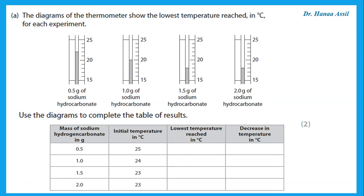Remember, we need to read these thermometers. The initial temperature is given as a whole number, which tells us that what we read should also be a whole number — no decimal places. For 0.5 grams the reading is 22 degrees Celsius, for 1 gram it is 20, for 1.5 grams it is 18, and for 2 grams it is also 18. The decrease in temperature is the difference from 25: so it went down 3, 4, 5, and 5.